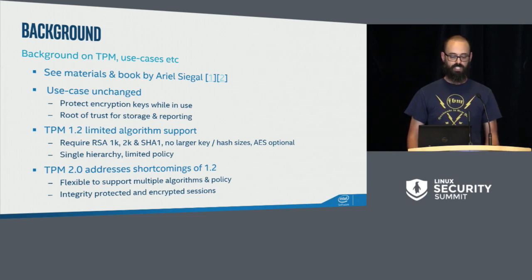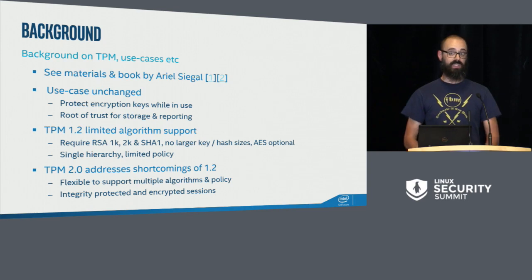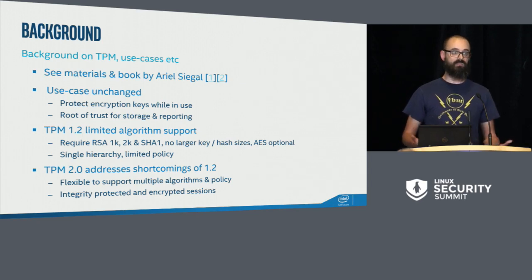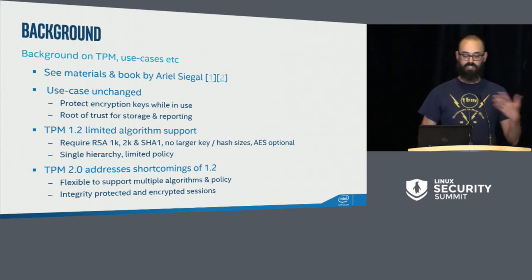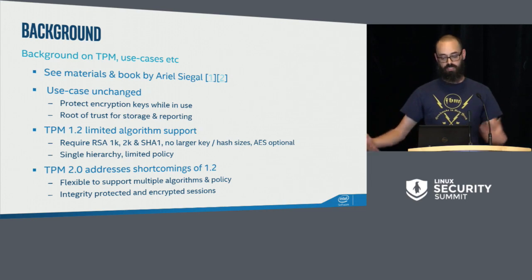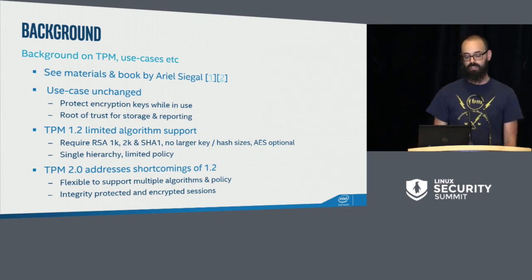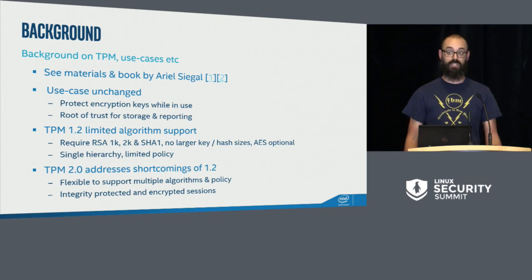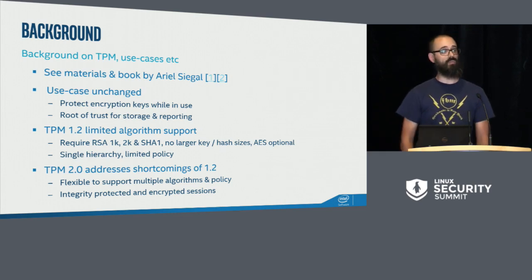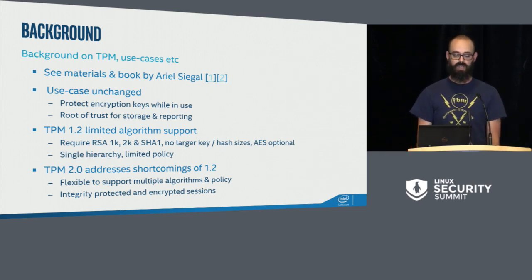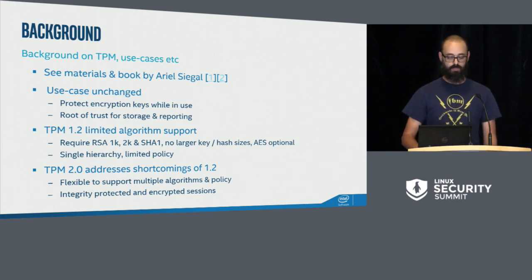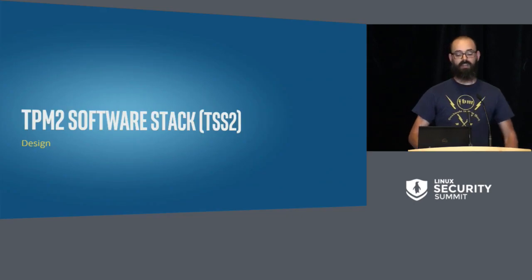The TPM 1.2 and 2.0 didn't change much as far as those use cases are concerned. However, the actual implementation has changed fairly drastically. Algorithm support, having algorithm agility — meaning you can start implementing new algorithms in the TPM and the structure of the command and response buffers is resilient to this. The 2.0 has also added protection for the communication path between the application and the TPM itself: integrity-protected and encrypted sessions.